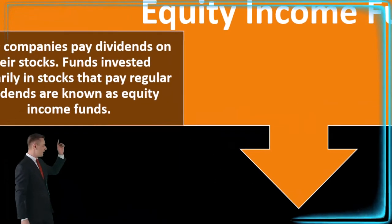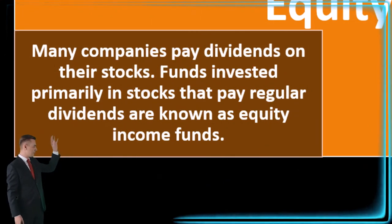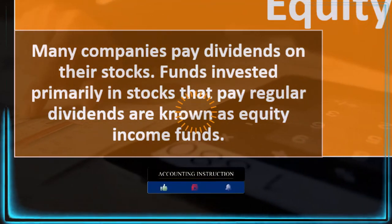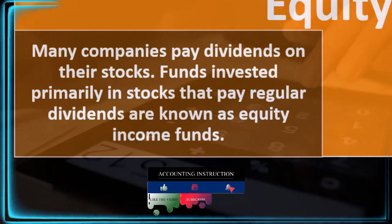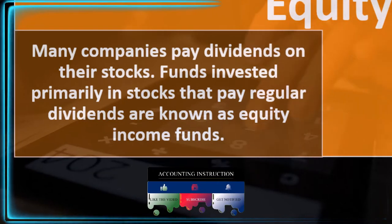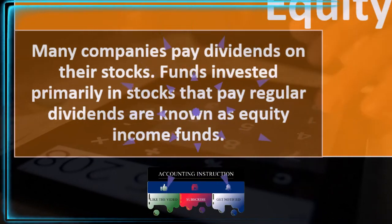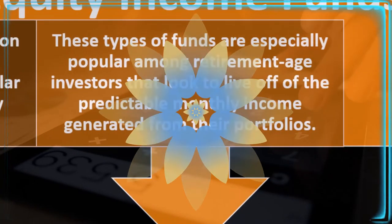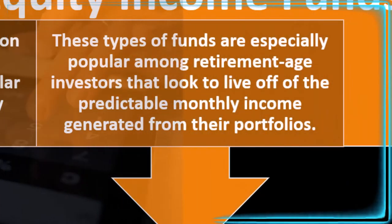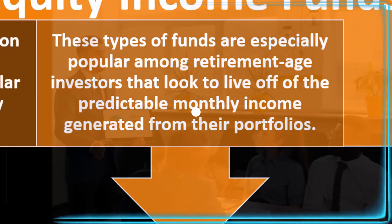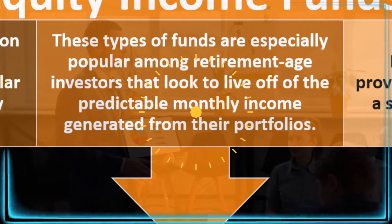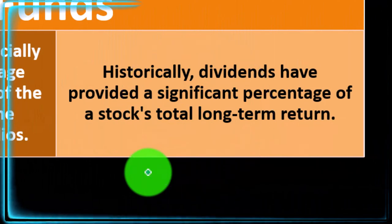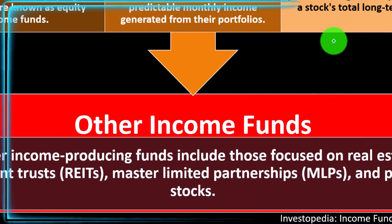Equity income funds: many companies pay dividends on their stocks. If we're in retirement trying to get income from our nest egg, we want stocks that will give us dividends. Funds invested primarily in stocks that pay regular dividends are known as equity income funds — typically the more established companies. These types of funds are especially popular among retired investors who look to live off the predictable monthly income generated from their portfolio. Historically, dividends have provided a significant percentage of a stock's total long-term return.